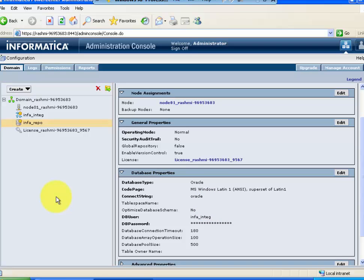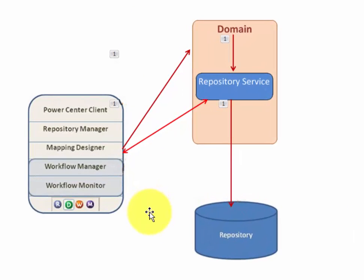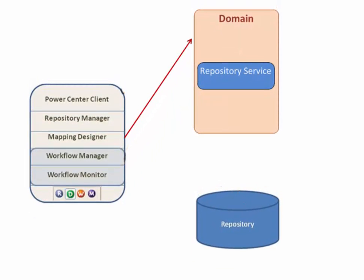Now let's go back to the actual theoretical discussion and look at the interaction between different components in PowerCenter. Suppose you have created a mapping in Designer and you want to save it. When you press Ctrl+S, Designer sends the request to the domain. Domain redirects the request to repository service. Repository service interacts with Designer. When you try to retrieve the code, Designer again sends the request to the domain, and the domain routes this request to repository service.